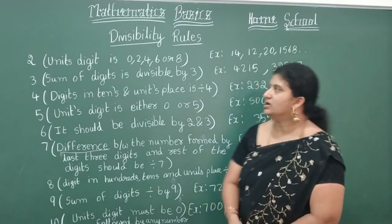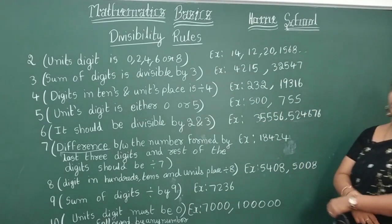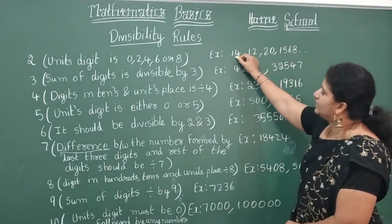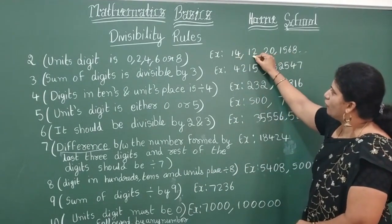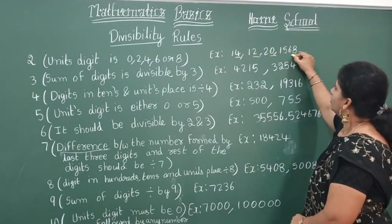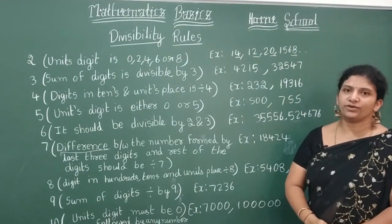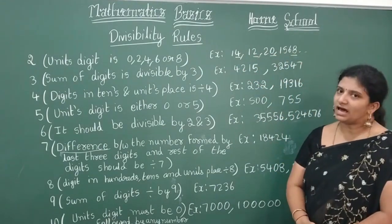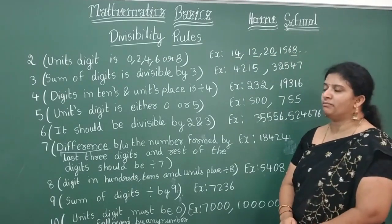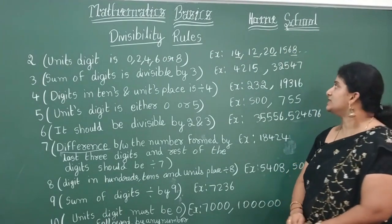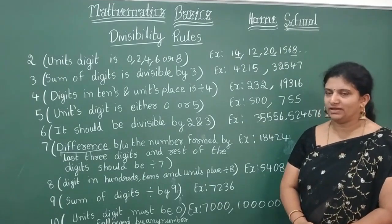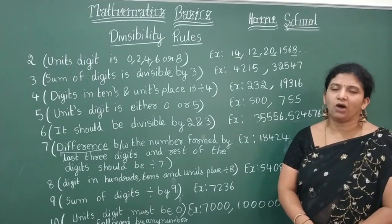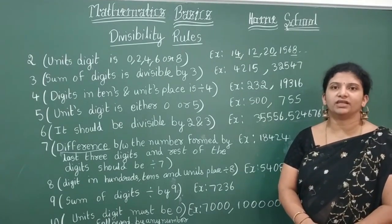Let's see examples: 14, 12, 20, 15, 68. Look at the units digits: 4, 2, 0, 8 — these numbers are divisible by 2 and are also called even numbers.